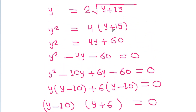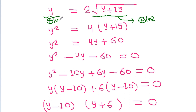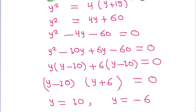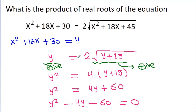Since y = 2√(y + 15), the right side is always positive, so y must also be positive. Therefore y cannot equal -6, and we take y = 10. Substituting back, y = x² + 18x + 30.